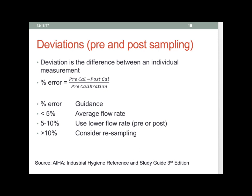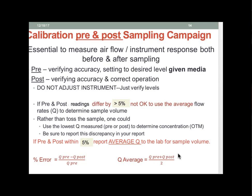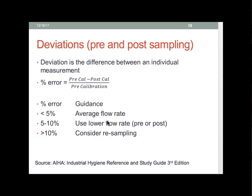To state that again: we calibrate before we sample, then we sample, then we calibrate after we sample, and we have these two flow rates. If they differ by less than 5%, we take the average — flow rate before plus flow rate after divided by 2 — and use this to calculate our sample volume. If they differ by between 5% and 10%, then we use the lower of the two flow rates. If they differ by greater than 10%, we should consider resampling.